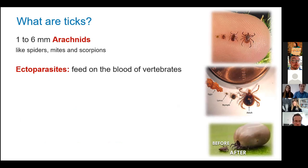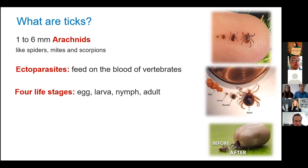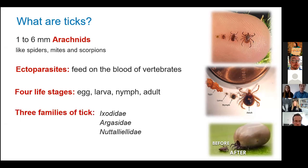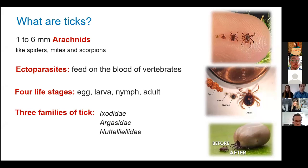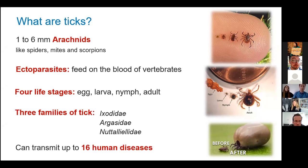They have four different life stages, as shown by the image on the right: egg, larva, nymph, and adult. Although there are three families of ticks, the main one we're interested in is the Ixodidae family, also known as the hard shell ticks, as this is the family you're most likely to run into here in the UK. Ticks are also carriers of quite a few pathogens that can cause illness in both humans and animals, but we'll talk about that more later.